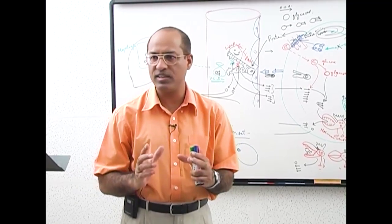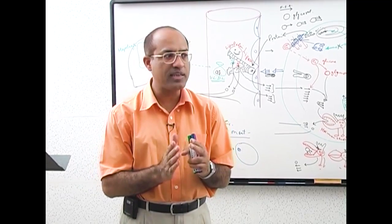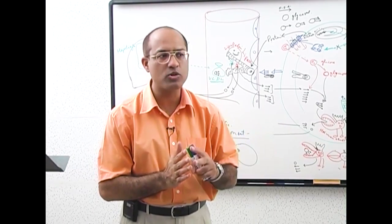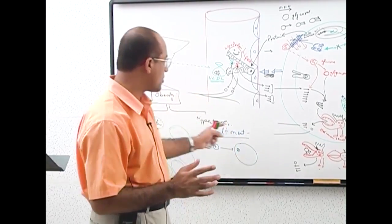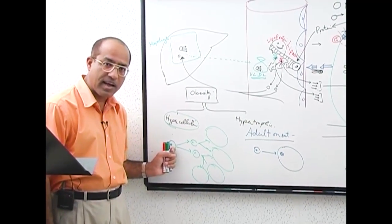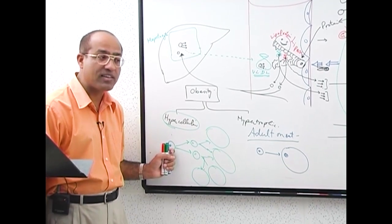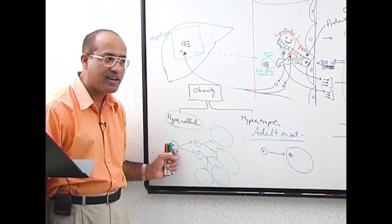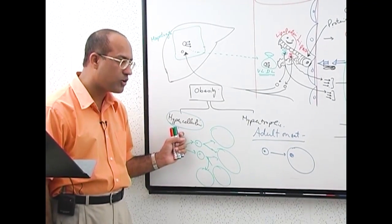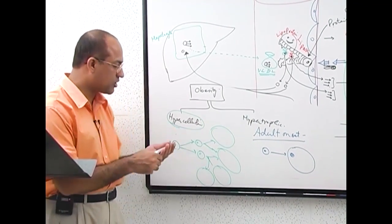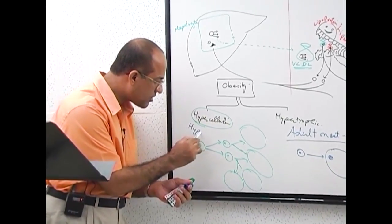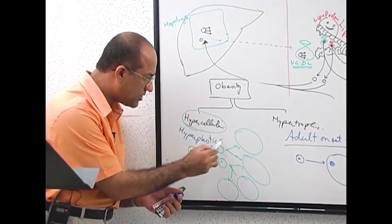Obesity can be due to simply an increase in the size of fat cells — that is adult onset obesity, also called hypertrophic obesity. Or it may be early age onset obesity, in which fat cells can even multiply when overloaded with fat, and we call it hyperplastic or hypercellular obesity. Hyperplasia means increase in number, so it can be called hypercellular obesity or hyperplastic obesity.